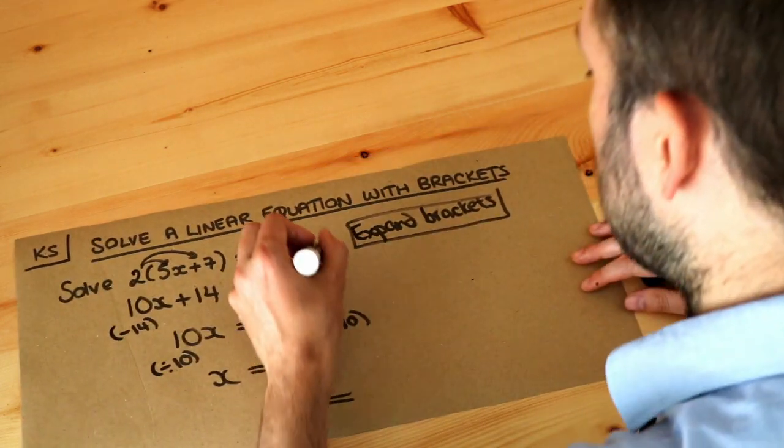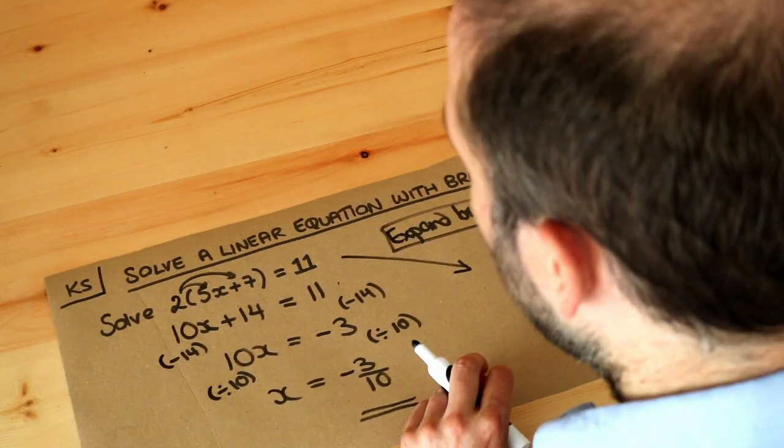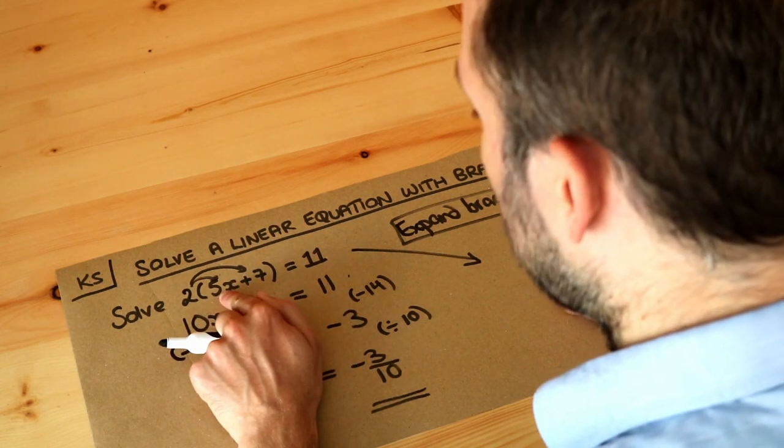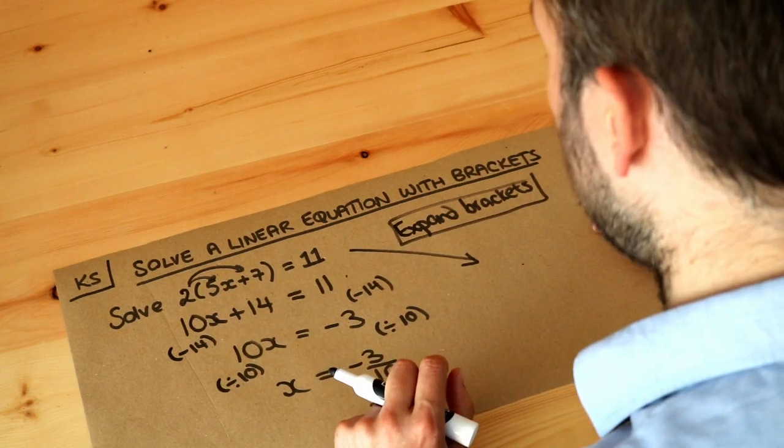There is actually an alternative way to do this, which I wouldn't suggest. If we think about what's happening to x and then do the opposite: x is being multiplied by 5, then you add 7, and then that whole thing is being multiplied by 2.